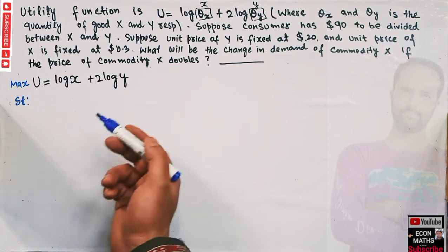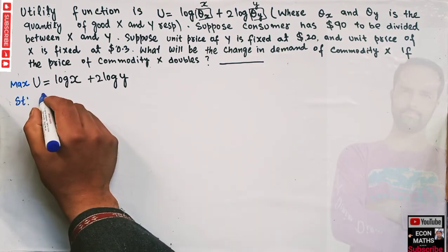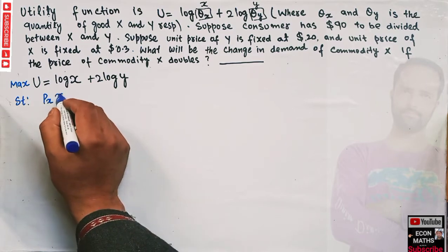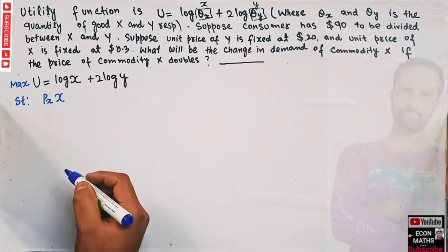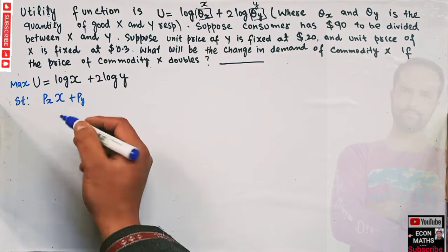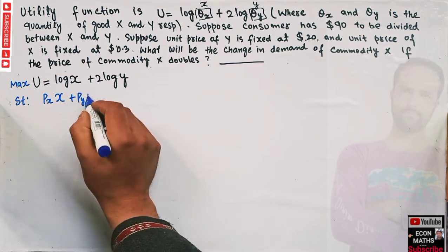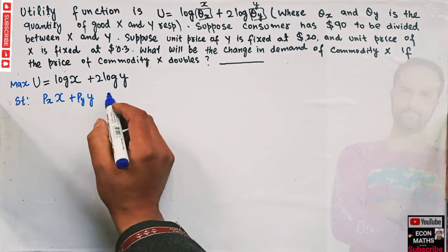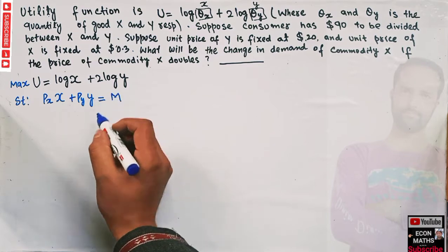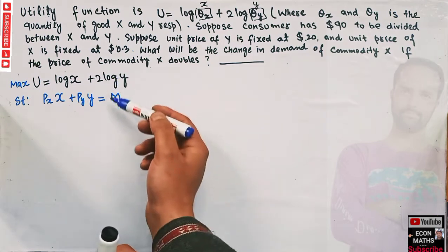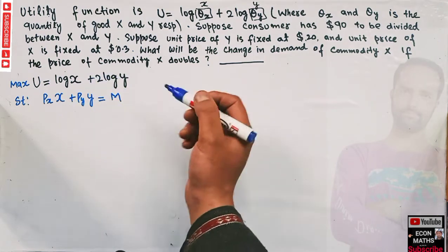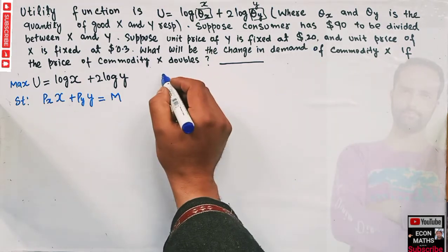Our budget constraint is: Px·X + Py·Y = M, where Px denotes the price of good X, X denotes the units of good X purchased, Py denotes the price of good Y, Y denotes the units of good Y, and M is the total income.